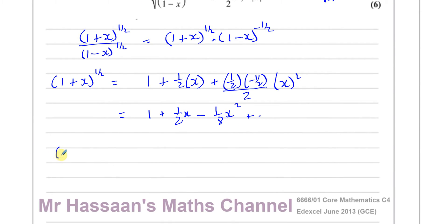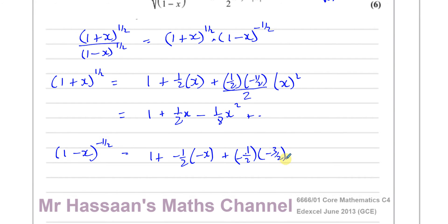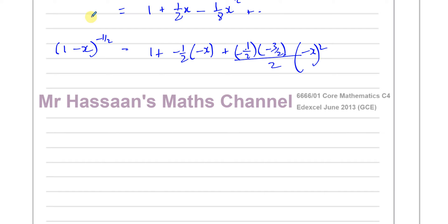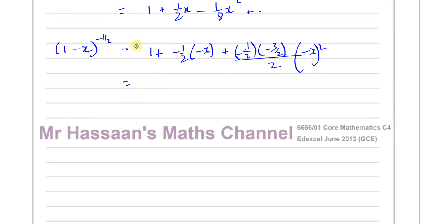Now for (1 minus x) to the power of minus a half: we have 1 plus (minus a half) times (minus x), plus (minus a half)(minus three halves) over 2 factorial times (minus x) squared. Simplifying: two negatives multiplied give a positive for the x term, giving 1 plus a half x, and the x squared term is also positive giving plus three eighths x squared.